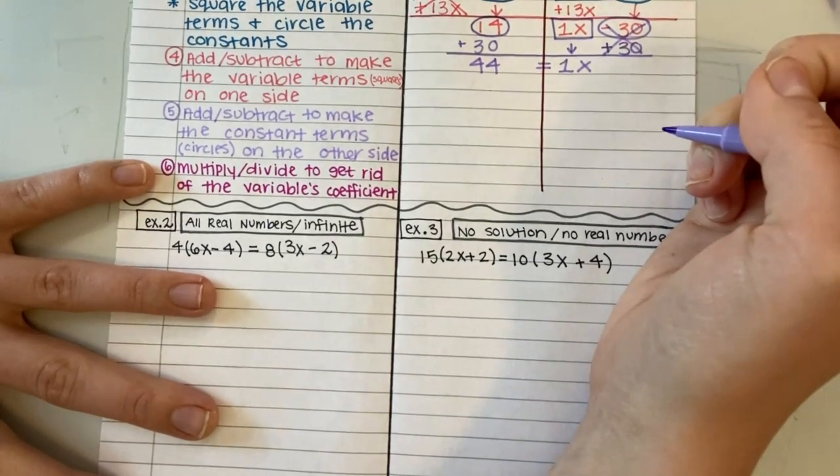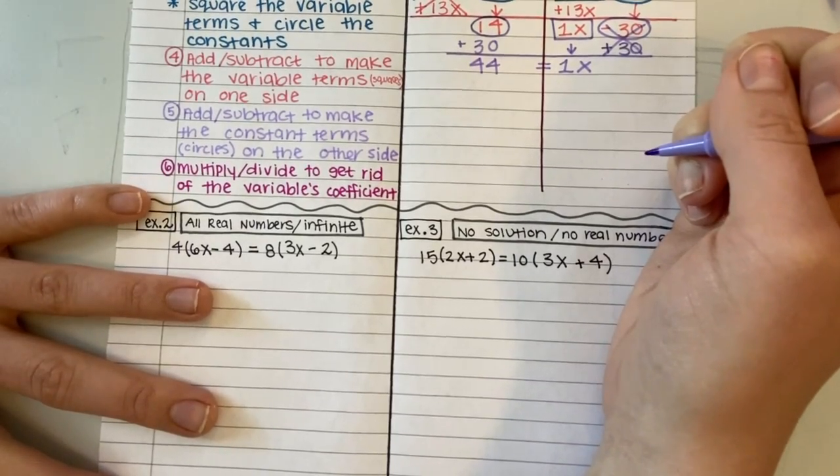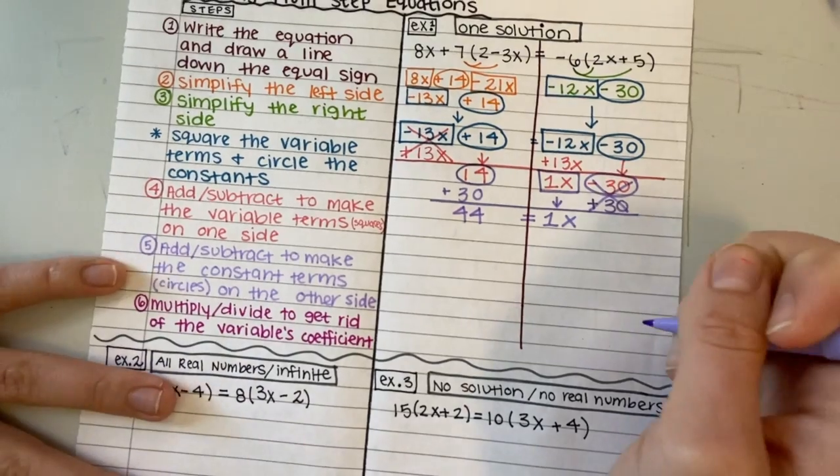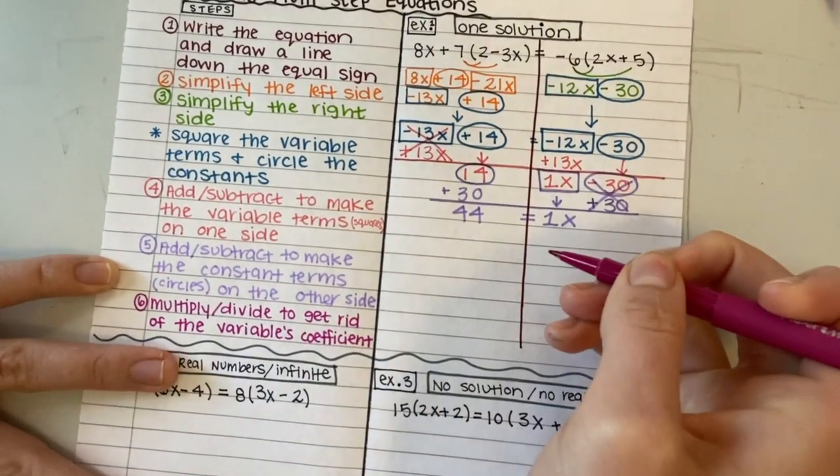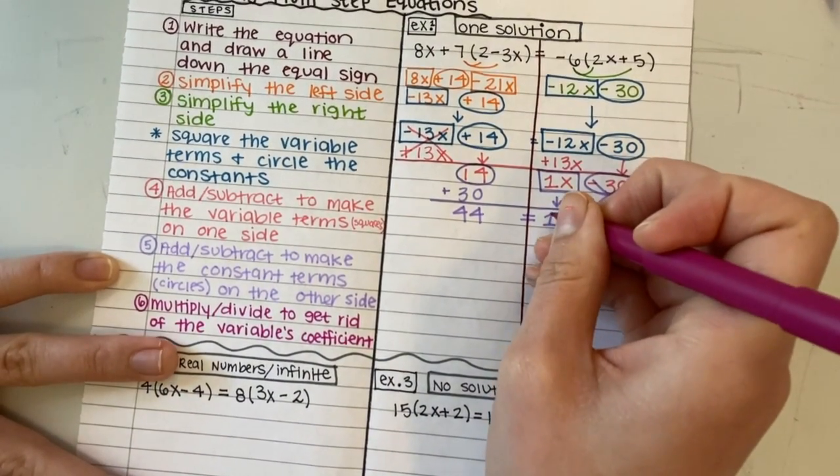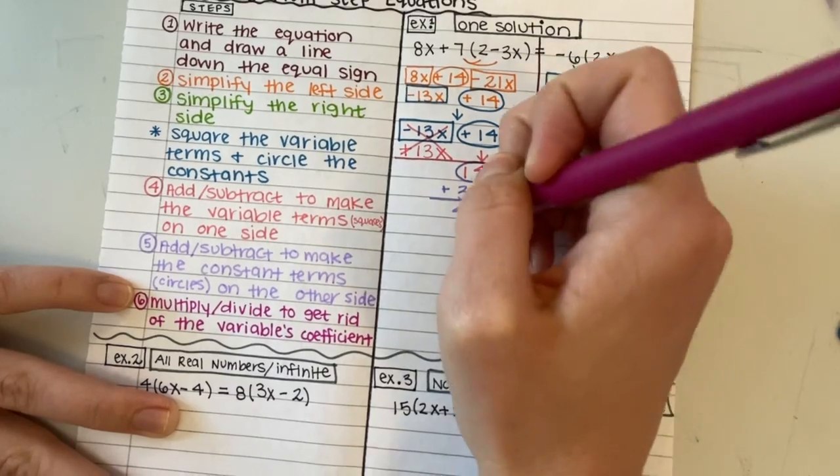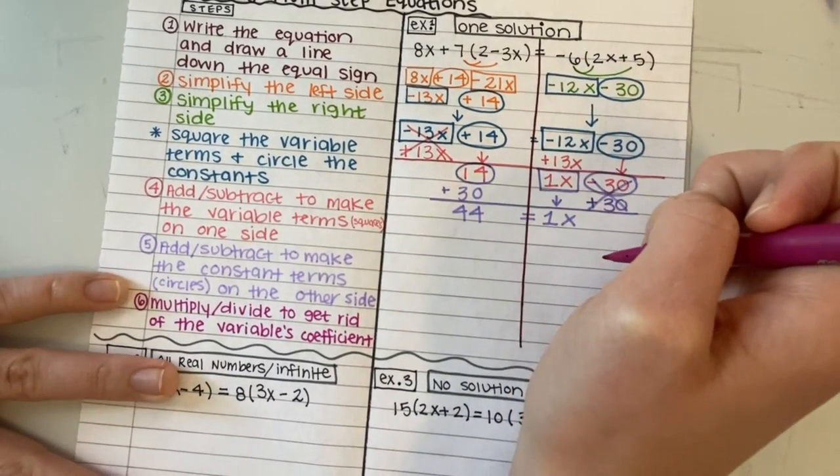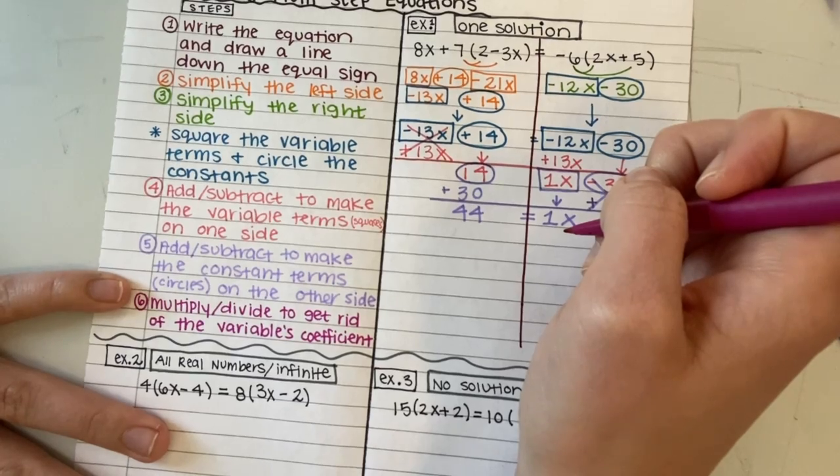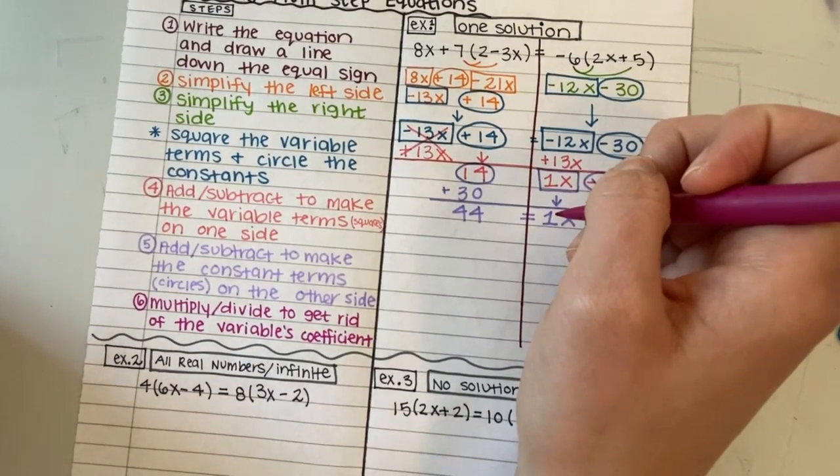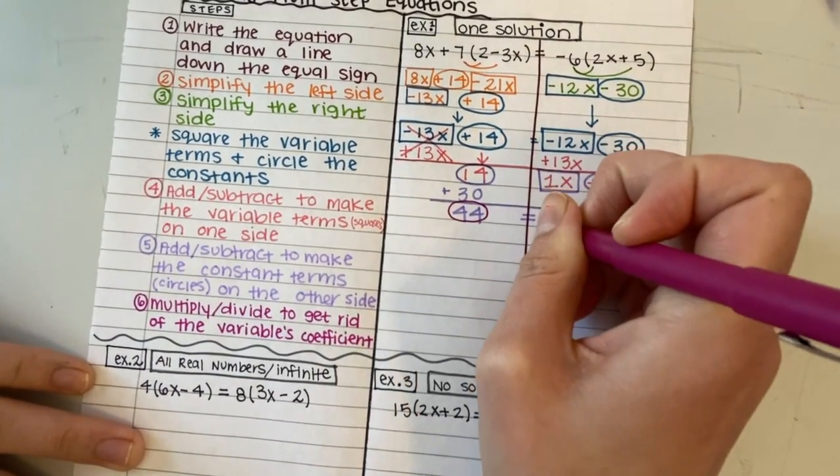And I know that 44 equals 1x. So I know already that x equals 44. But what I'm going to do is just show you how we would do step number 6, if it were the case that we had to multiply or divide to get rid of the coefficient. So we are now on step 6. Up until here, when we are looking at both sides, we are only doing addition and subtraction. Now that I have a circle on one side and a square on the other, I can do multiplication and division.